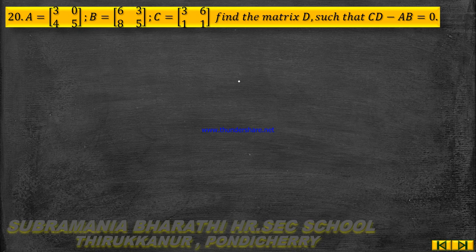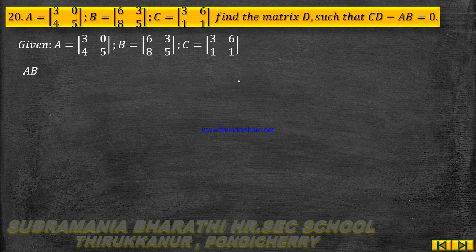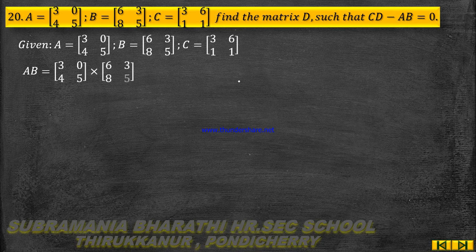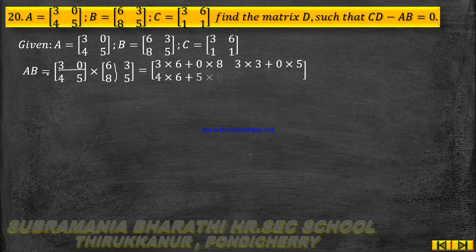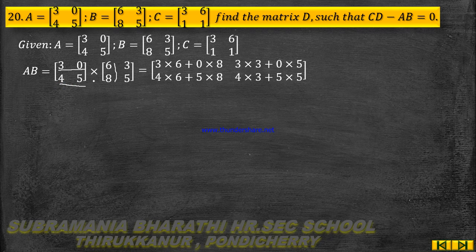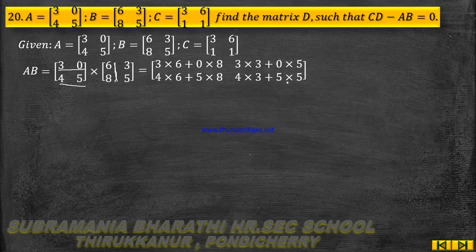This clue is what we are going to use now. First, let's find the given matrices. Matrix A equal to Matrix B and Matrix C. So, to find AB: 1st row of A times 1st column of B: 3×6 plus 0×8. Next element: 3×3 plus 0×5. Next: 2nd row of A times 1st column of B: 4×6 plus 5×8. Next: 4×3 plus 5×5.